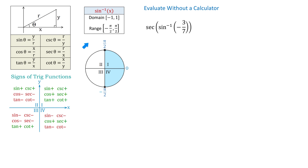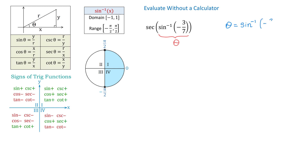The range of the inverse sine function is anything from negative pi over 2 to positive pi over 2. So inverse sine of negative 3 over 7 is an angle and we will call it theta — an angle in this interval from negative pi over 2 to positive pi over 2 whose sine is negative 3 over 7. So we will write that theta equals inverse sine of negative 3 over 7, then sine of theta equals negative 3 over 7.